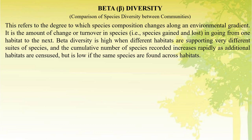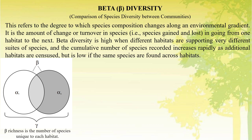Beta diversity refers to the degree to which species composition changes along an environmental gradient. It is the amount of change or turnover in species — that is, species gained or lost — in going from one habitat to the next. Beta diversity is high when different habitats are supporting very different sets of species and the cumulative number of species recorded increases rapidly as additional habitats are censused, but is low if the same species are found across habitats.